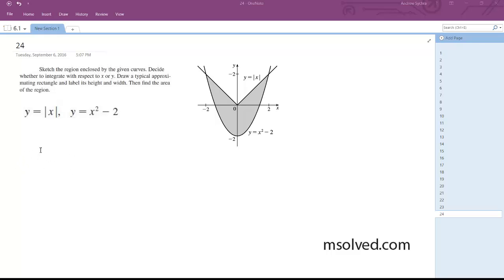So in this instance, because you have an absolute value sign, it kind of changes things. Alright, so from negative 2 to 2, absolute value of x minus x squared minus 2 dx.